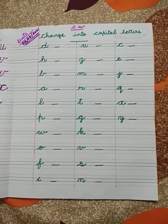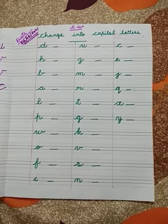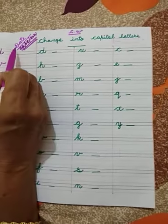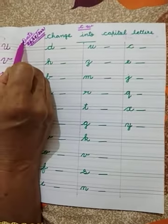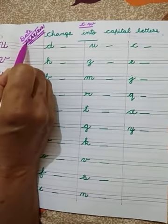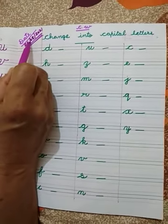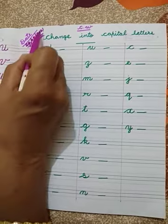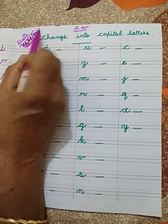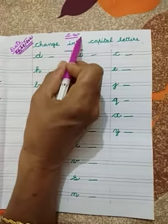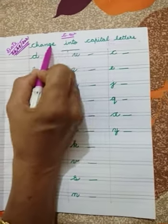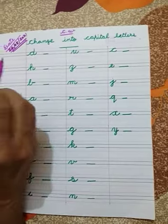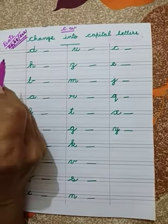Open your notebook. First, mention the date: 24-08-2021. CW — Change into Capitalities.